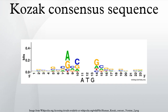Some nucleotides in this sequence are more important than others. The AUG is most important because it is the actual initiation codon encoding a methionine amino acid at the N-terminus of the protein. The A-nucleotide of the AUG is referred to as number 1. For a strong consensus, the nucleotides at positions +4 and −3 relative to the number 1 nucleotide must both match the consensus.